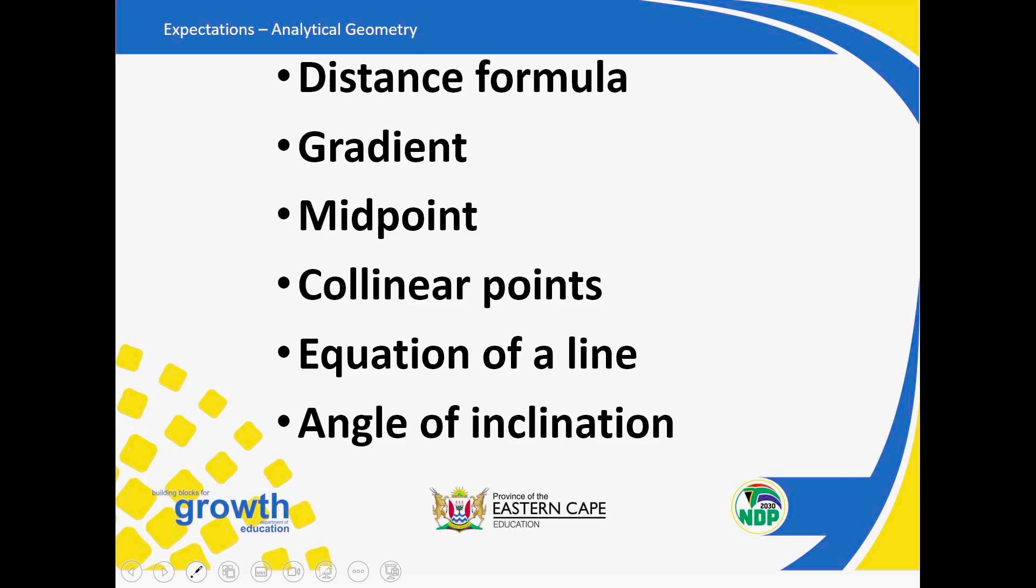Midpoint, you must know the only formula where we add the coordinates and divide by two. Collinear points, you can do that using gradient, also using distance formula. Like when you are using distance formula, you are saying points that are on a line A, B, and C. So using distance formula, AB plus BC must give you AC. Using gradient formula, it's M of AB is equal to M of BC is equal to M of AC. You can use either of those two.